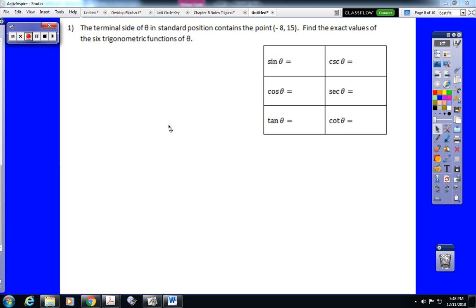All three problems are the same format. What we've got here is the terminal side of theta in standard position contains the point negative 8, 15. Find the exact values of the six trigonometric functions of theta. So you're going to go to your reference sheet. And on your reference sheet is going to be the following information.